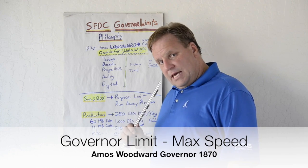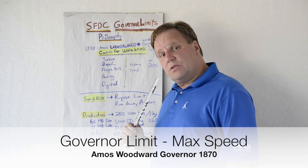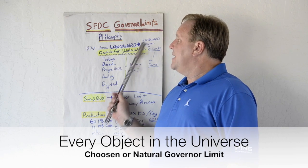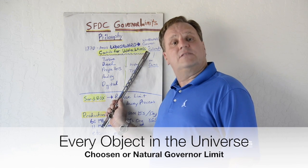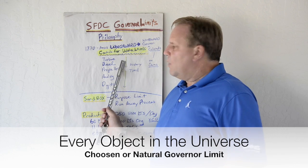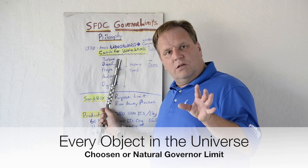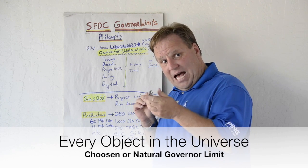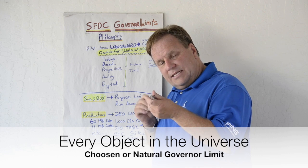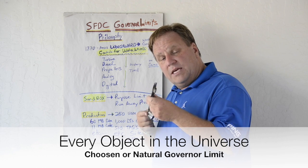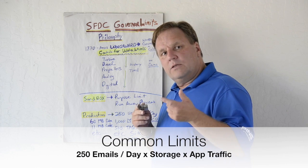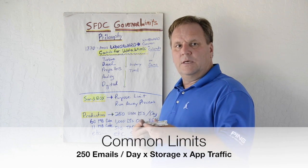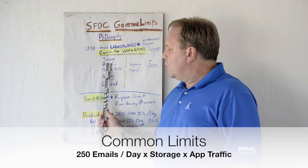The philosophy: in 1870 a guy called Amos Woodward created a Woodward governor, and that company exists today and employs thousands of people in Colorado. What the Woodward governor did was it was a control for water wheels, so regardless of how fast the water flowed, the axle in the dam would be consistent in turning the turbine for power, for machines, or for mills.